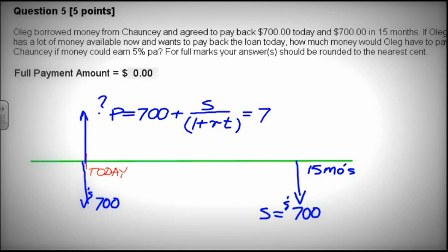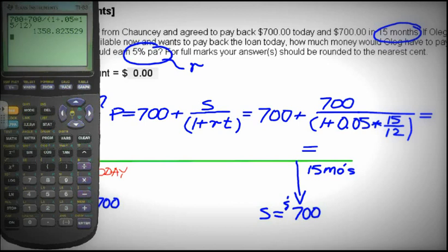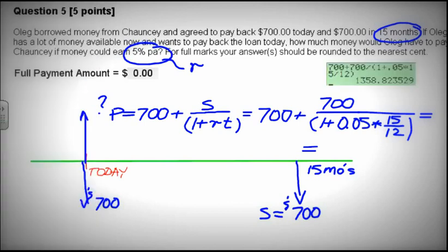Question 5: In this case, he wants to eliminate those two payments and pay one single payment. Today, the value of the first payment today is $700, while in the second payment, that's the future sum, $700 divided by 1 plus RT, or 1 plus 0.05 times 15 over 12, and using the calculator, we have value of $1,358.82.